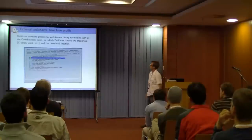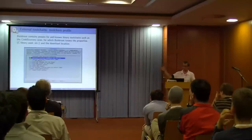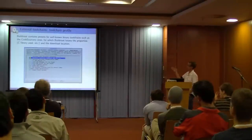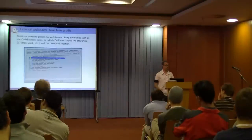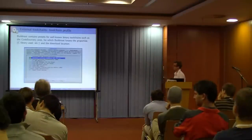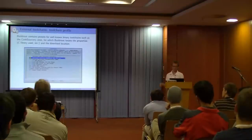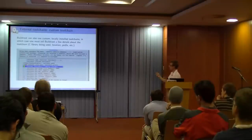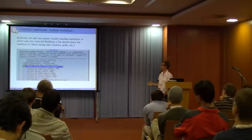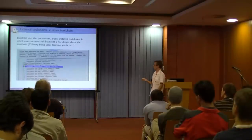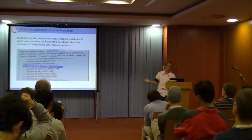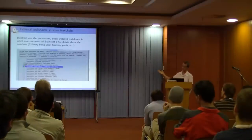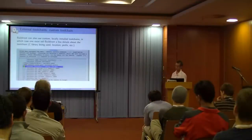BuildRoot has presets for well-known toolchains like CodeBench (formerly CodeSourcery, now owned by Mentor). It knows their download locations and configurations — you just say 'ARM system, use CodeBench 2011.03' and it downloads and configures itself automatically. It's also possible to specify custom toolchains: provide its location, prefix, C library type, and whether it supports IPv6, RPC, locales, etc. BuildRoot then ensures you don't accidentally select packages incompatible with your toolchain.